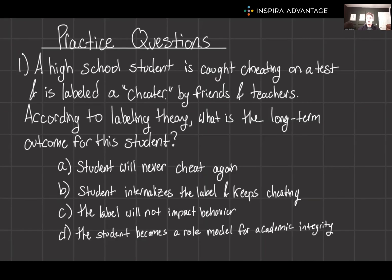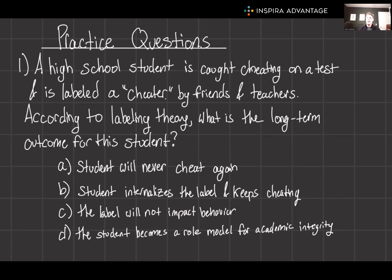Let's finish off with some practice questions. A high school student is caught cheating on an exam and is labeled as a cheater by both peers and teachers. According to labeling theory, what is a likely long-term outcome for the student? The correct answer is B: the student internalizes the label and continues to engage in cheating, believing it to be a part of their identity. The student was labeled a cheater, so he's going to be a cheater forever.